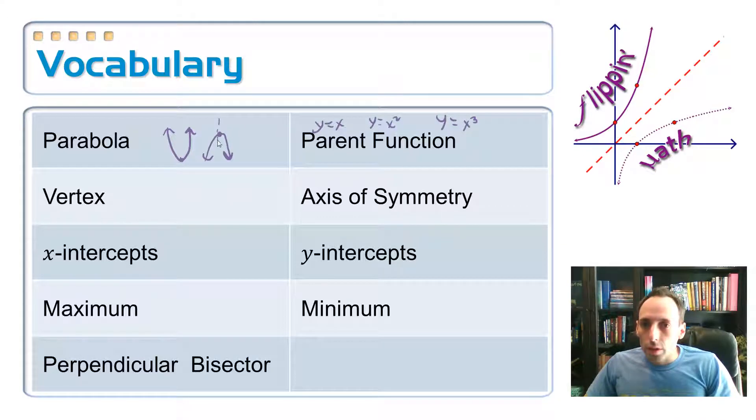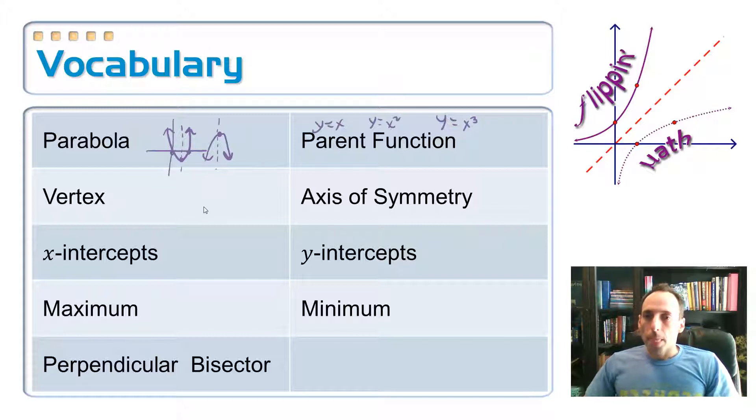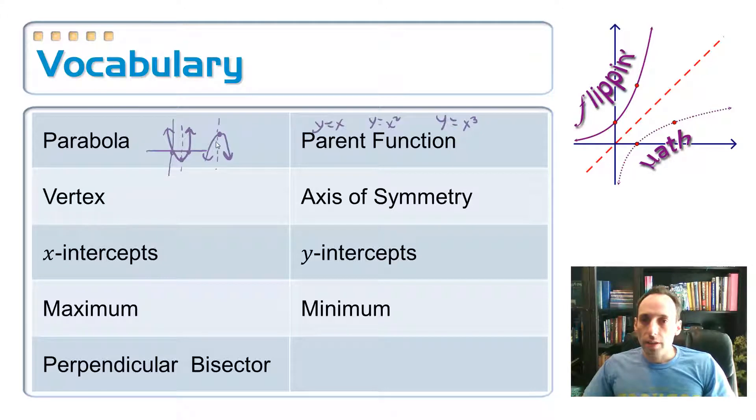X-intercepts - let me just draw myself an x-axis here - just where it touches the x-axis. We put a y-axis in there, that's where it touches the y-axis. Minimum and maximum point - you can see that's the point on the parabola as low as it goes and how high it goes.